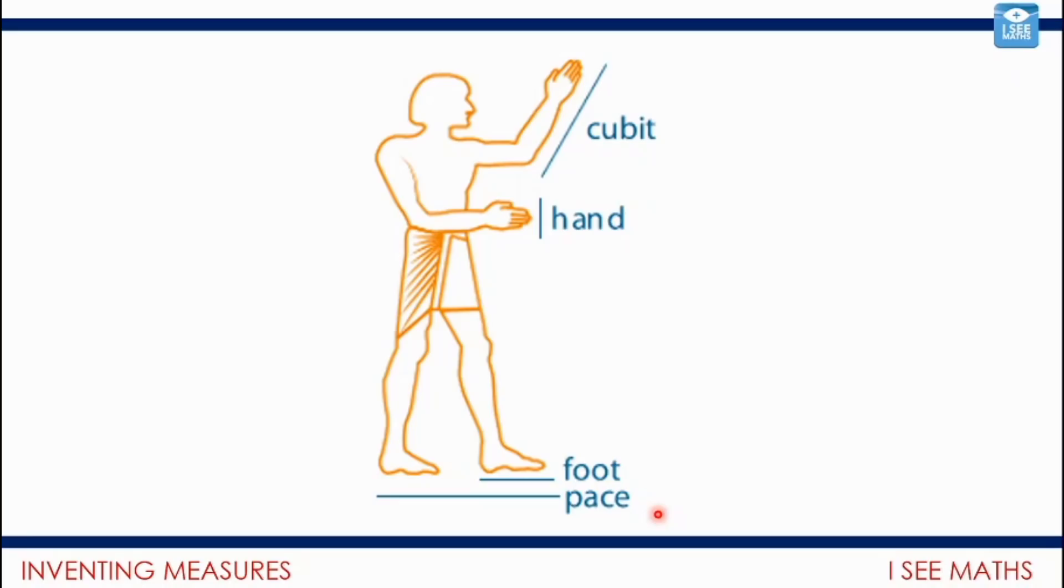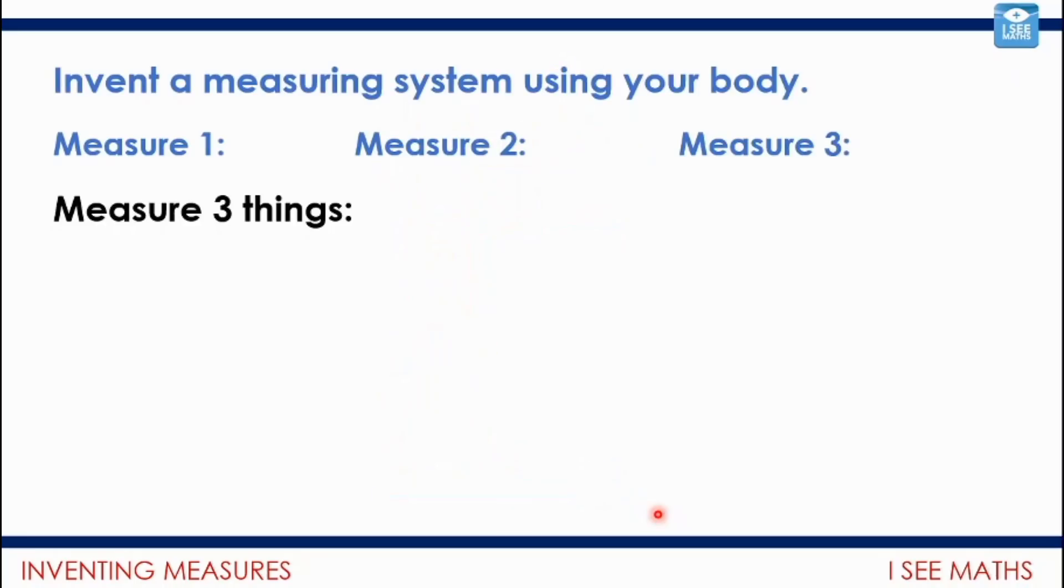Before there were standard methods for measurement, people would often measure using body parts like hands or a cubit, which is the length from an elbow to a fingertip or feet or paces, to try and have common ways of measuring things. Of course, they were slightly less precise because the size of one person's hand will be slightly different to the size of another person's. But at least it was a way of comparing and describing, in this case, lengths.